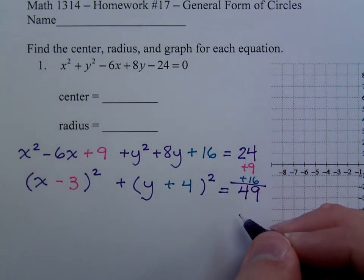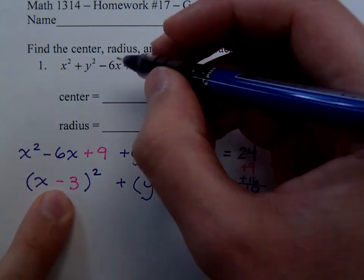And so it's from here that we can pick off our coordinates for the center. So that would be the opposite of this guy, so that's going to give me 3.